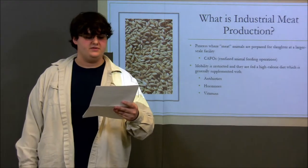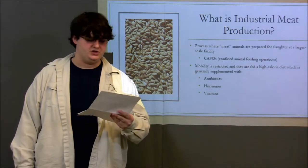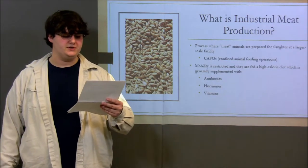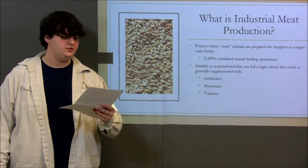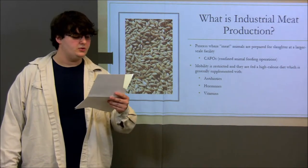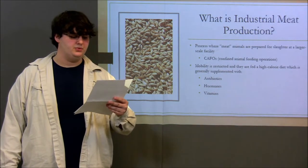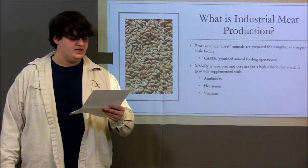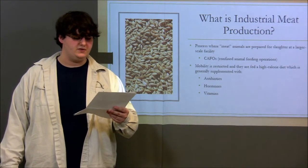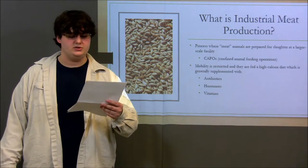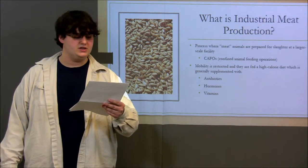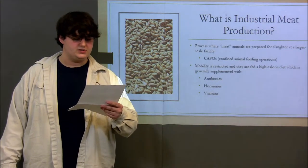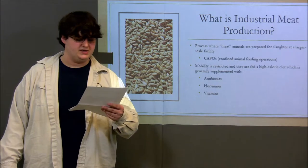On the other side of that coin, we have industrial meat production. Put simply, industrial meat production is the practice of producing meat in the most efficient way possible. In order to do this, most facilities employ CAFOs, or Confined Animal Feeding Operations. In a CAFO, animals such as beef cattle, pigs, or chickens are kept in extremely tight quarters. Everything from the breeding of the animals to waste disposal to slaughter is treated as a factory process.